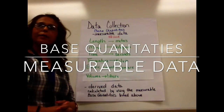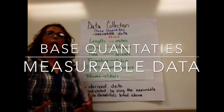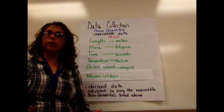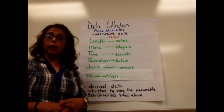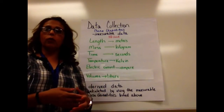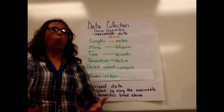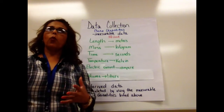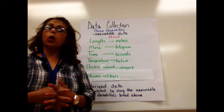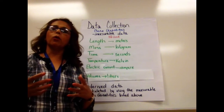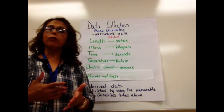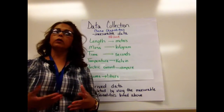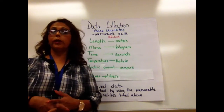In today's tutorial, we're going to look at data collection and how we make our experiments valid based on facts that we can collect as we're going along. We can collect two types of data: quantitative data, which deals with numbers, and qualitative data, that deals with words describing. We really like to focus on quantitative data because it is more factual — we can actually see it, everybody can agree, and we can verify each other's results by repeating the experiment.